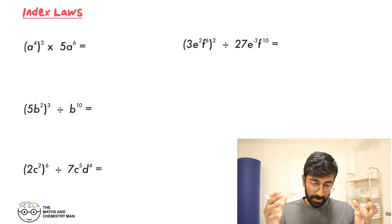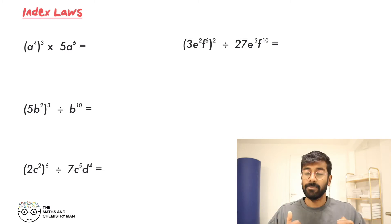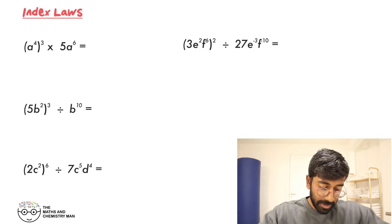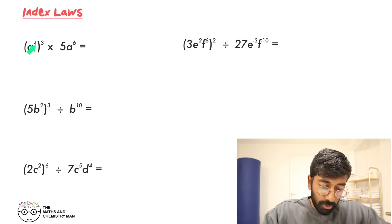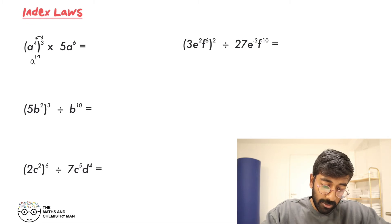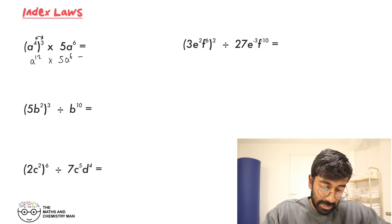Now here's what we're doing — we're going to combine everything we've learned together. With the first one, A to the power of 4, all cubed: multiply those together to give A to the power of 12. And we're multiplying that by 5A to the 6. Now our bases are the same...